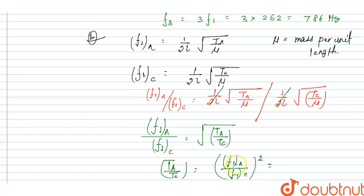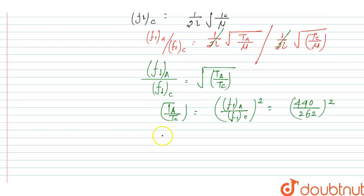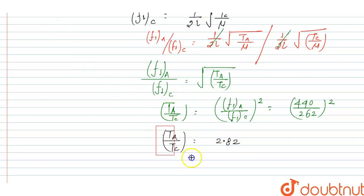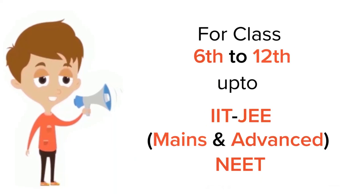Substituting the values: the fundamental frequency for A is 440 Hz and for C is 262 Hz. Therefore, Ta / Tc = (440 / 262)² = 2.82. This is the final answer.